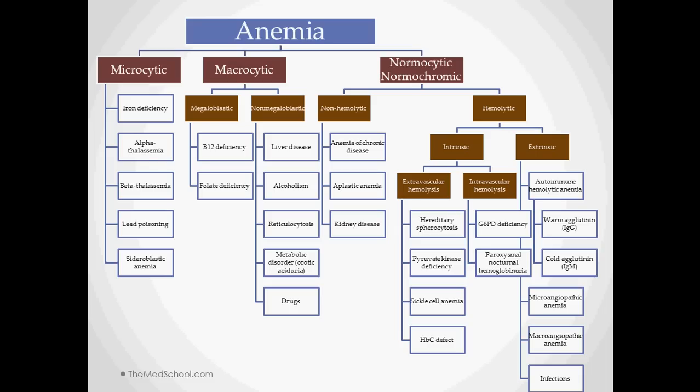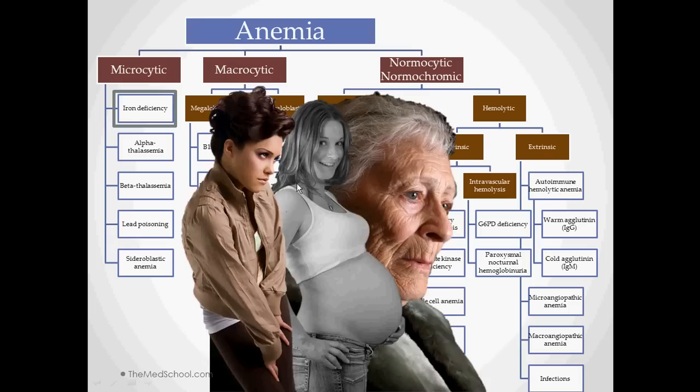So if we have a mean corpuscular volume below 80, we'll start to think about iron deficiency and some of the thalassemias, possibly lead poisoning, which is a lot less common these days. Or if we have high MCV levels, we start to think about the macrocytic anemias.